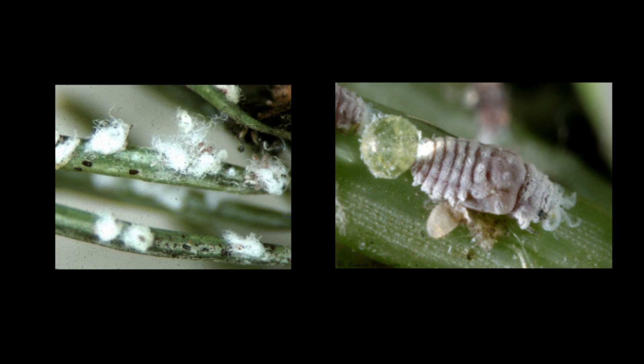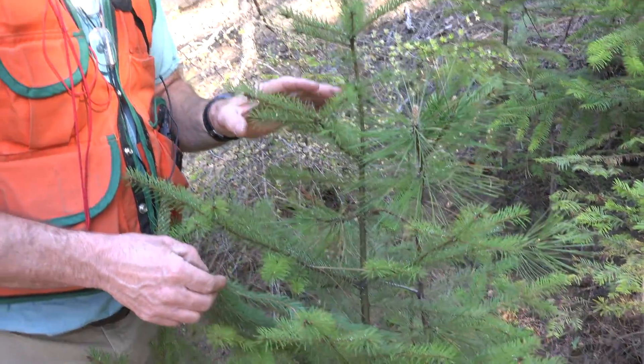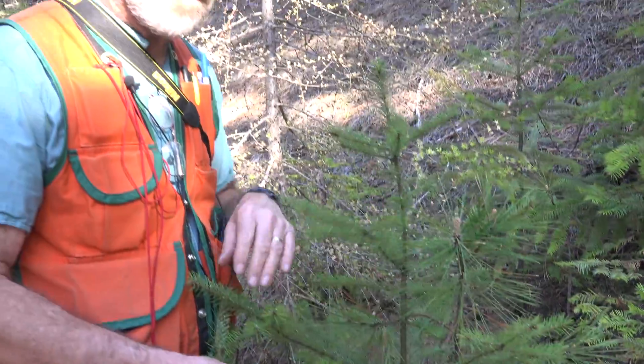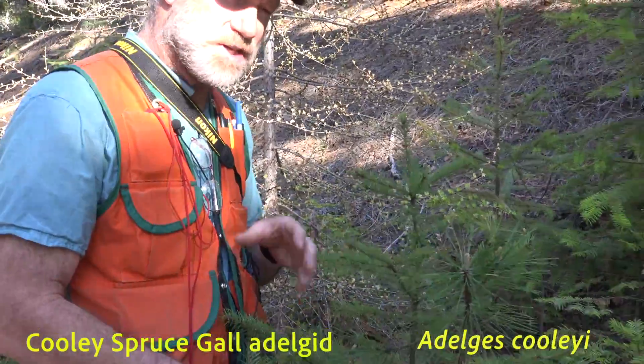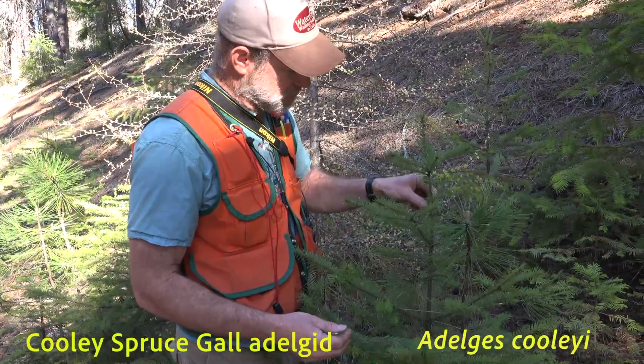It turns out that the webbing surrounds a small insect called an adelgid. Adelgids are related to aphids, so they are plant juice feeders. This particular one is called the coulee spruce gall adelgid.